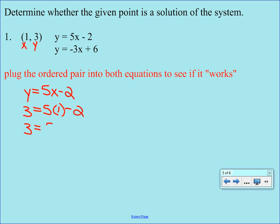So 5 times 1 is 5. And then we can subtract. And 5 minus 2 is 3. So this is good. We know that this ordered pair satisfies the first equation. And the check mark there means yes, it checks out. It does not mean that it's wrong.